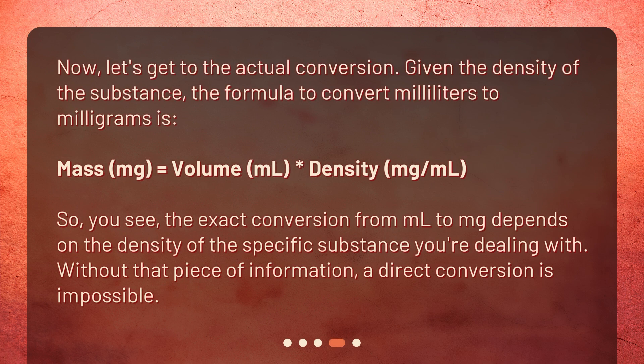Now, let's get to the actual conversion. Given the density of the substance, the formula to convert milliliters to milligrams is: mass (MG) equals volume (ML) times density (milligram per milliliter). So, you see, the exact conversion from ML to MG depends on the density of the specific substance you're dealing with. Without that piece of information, a direct conversion is impossible.